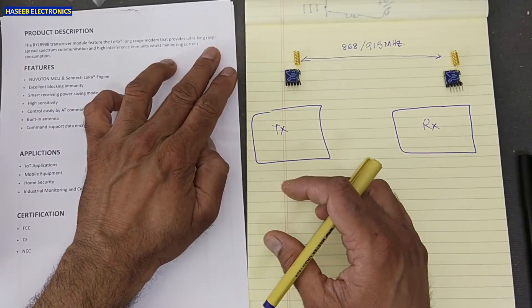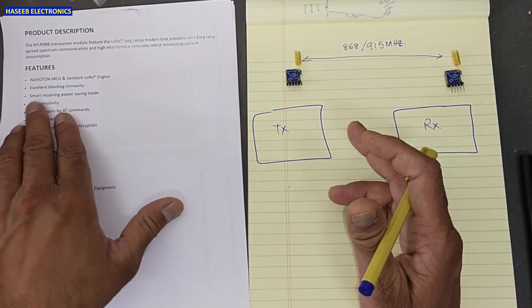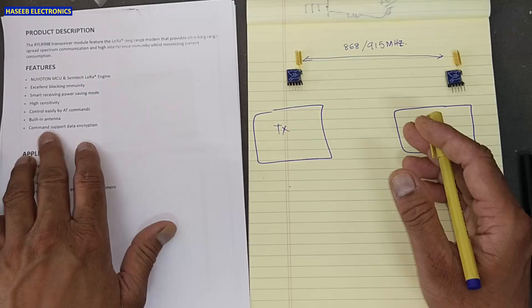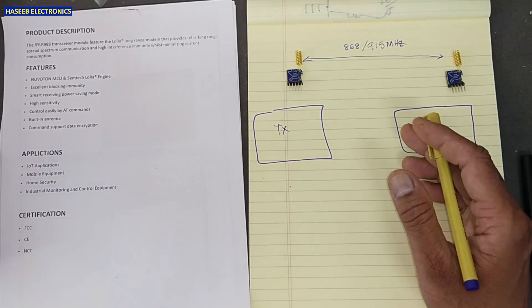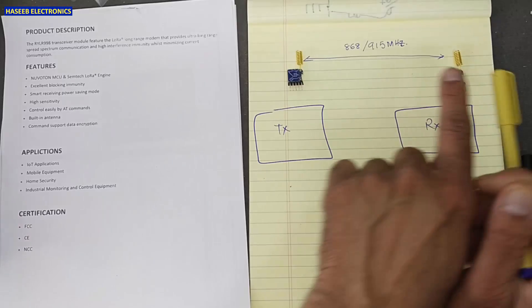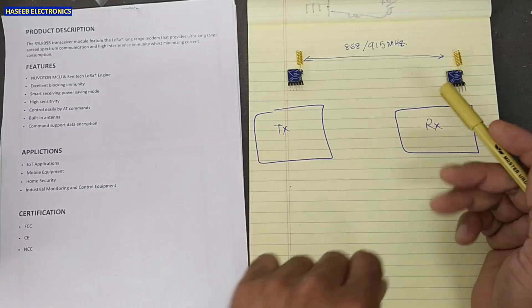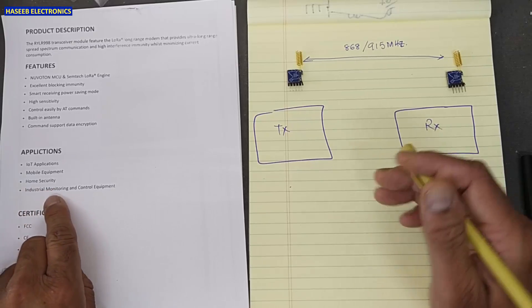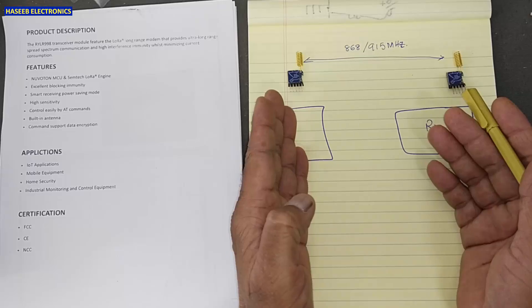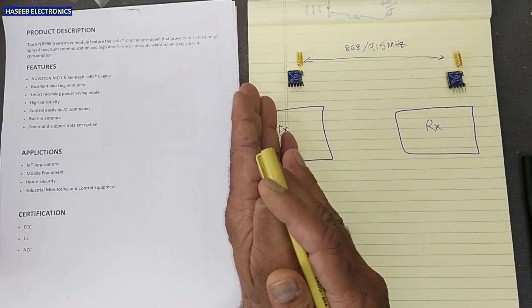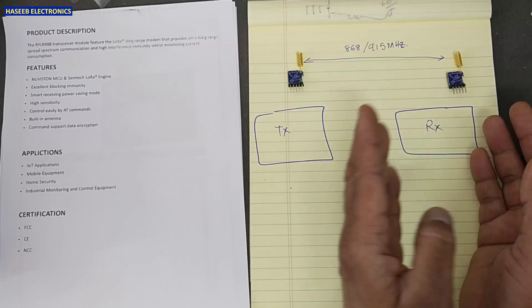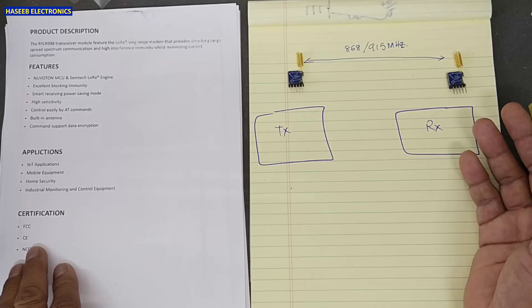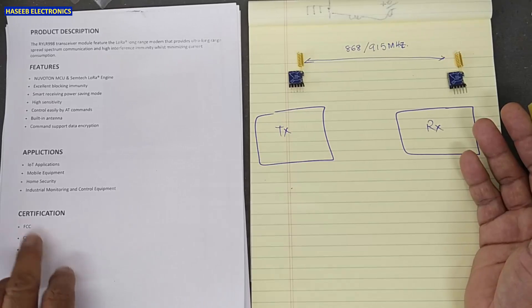Ultra long range, minimum current consumption, excellent blocking, high sensitivity and built-in antenna. And command supports data encryption. Any data it will transmit from one end to second end, it is encrypted data. IoT applications, mobile equipment, home security and industrial monitoring and control equipment. We can transmit data from any remote area to our control station to monitor something to give some commands. And it has FCC certified, CE and NCC. These are certifications.